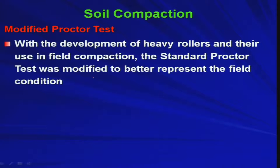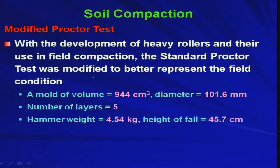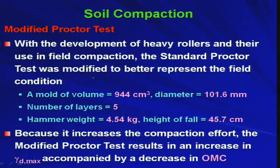The test procedure remains the same; only the dimensions of the test setup are different. A mold volume of 944 cm³ is used in the modified Proctor test. The mold diameter is 101.6 mm. Instead of 3 layers as in the standard Proctor test, you now use 5 layers. The hammer weight has been increased to 4.54 kg and the height of drop is also increased to 45.7 cm. Because it increases the compaction effort, the modified Proctor test results in an increase in gamma D max accompanied by a decrease in OMC.